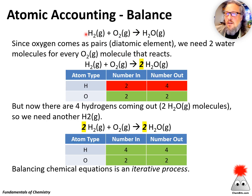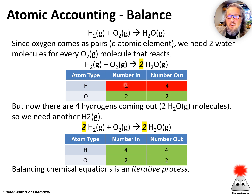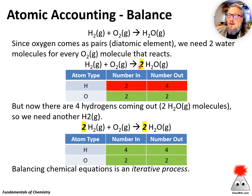Oxygen is coming in two at a time since these are diatomics. If water is only one oxygen, we probably need two waters. So what if I put a 2 in front of water? Now let's check our accounting table again: oxygens — two going in, two coming out. But hydrogens: there are two going in and now four coming out, because there are two water molecules and each water molecule has two hydrogens — a total of four hydrogens. So I fixed the oxygen, but I made a problem with the hydrogen accounting.